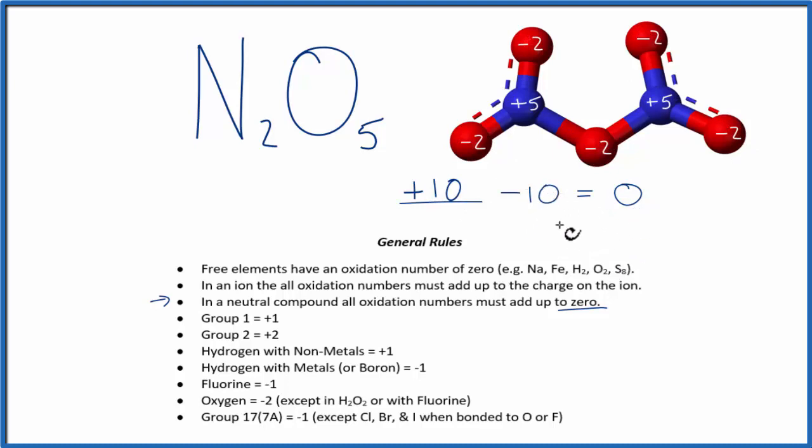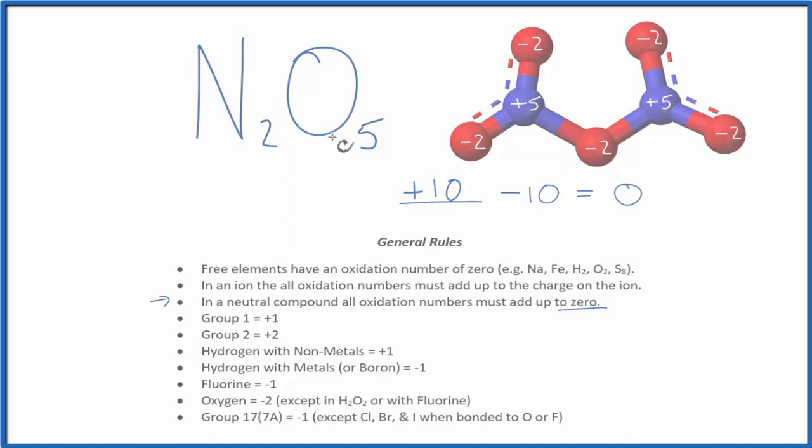So to recap, we found the oxidation numbers for the ones we knew, the oxygens, and then we use that with the fact that a neutral compound will have all the numbers add up to 0, to figure out the one we didn't know, the nitrogens. This is Dr. B with the oxidation numbers for N2O5, dinitrogen pentoxide. Thanks for watching.